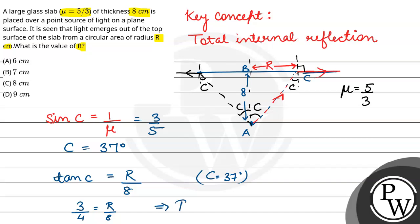r equals 6 cm. So the final answer is option number c, option number a, 6 cm. Hope you understood it well. Best of all.